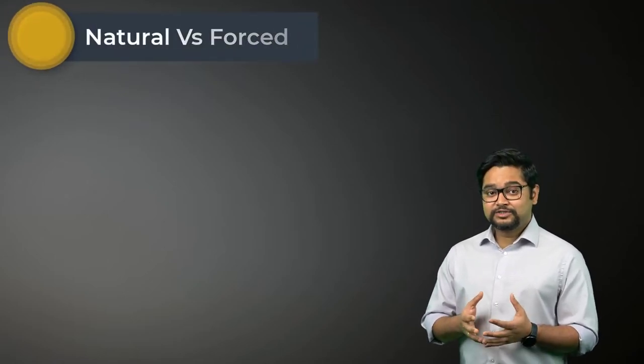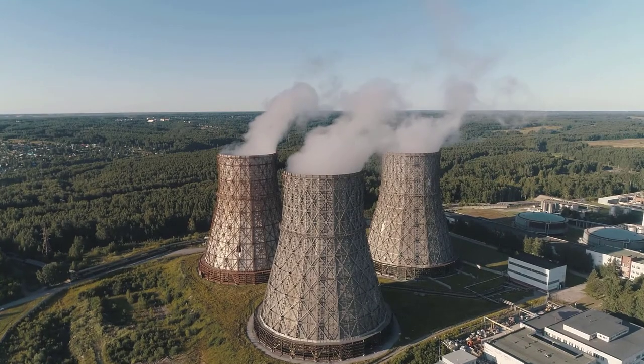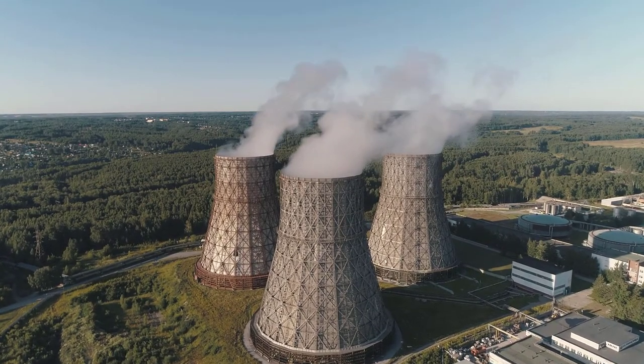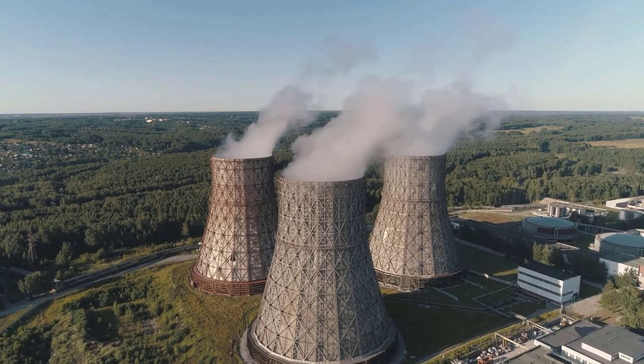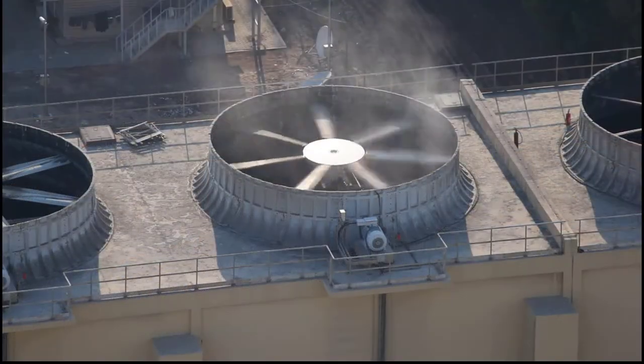Natural convection occurs due to a buoyancy force that acts on a fluid having density gradients. These density gradients are usually due to temperature differences. In the case of natural convection, the flow velocities are generally smaller than those associated with forced convection, and therefore the corresponding convection heat transfer rates are also smaller. As a result, applications relying on natural convection are typically larger in size compared to their forced convection counterparts.